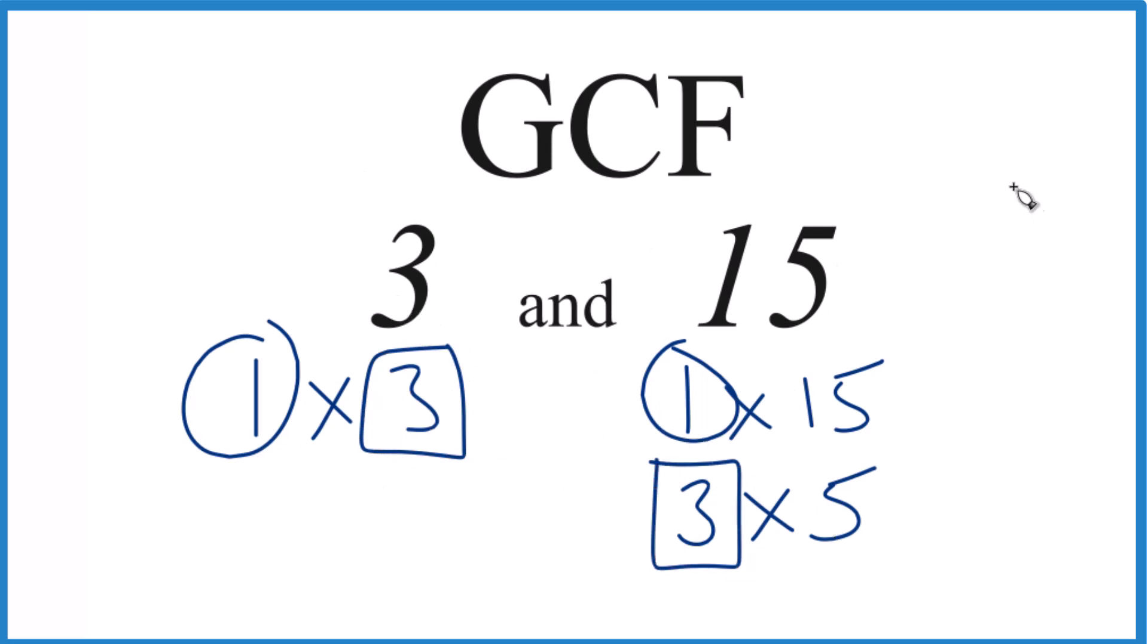So in answer to our question, the GCF for 3 and 15 is just 3. You can use other methods like prime factorization, you get the same answer, but with numbers that are small it's a lot easier to do it this way.